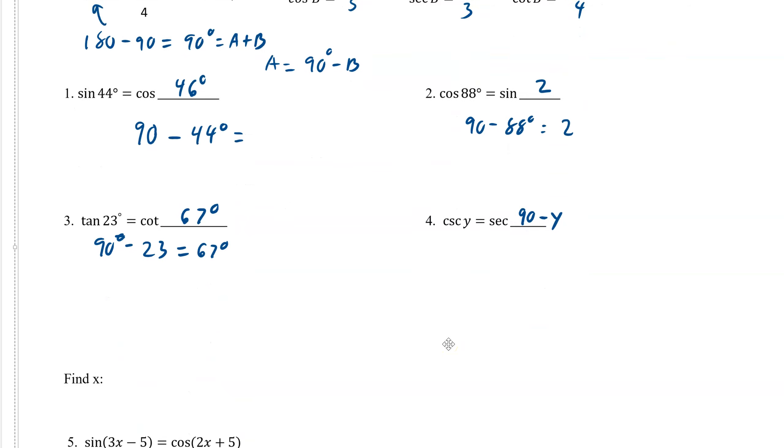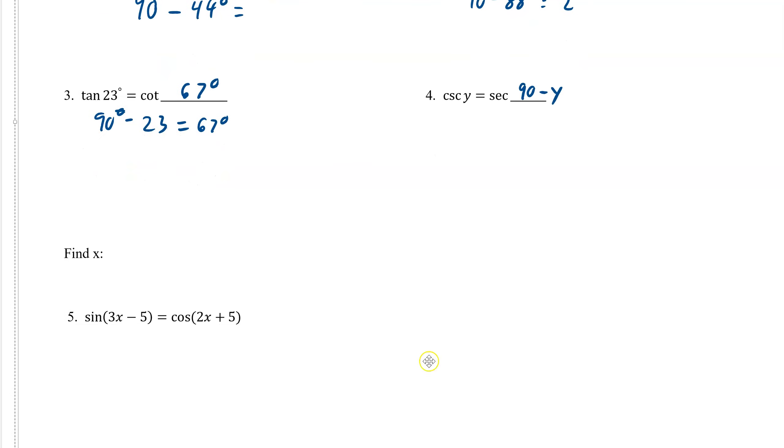All right. So let's try a little bit more complicated one. Let's find x. Since sine and cosine are both equal, we know that the angles that are given have to add up to 90.